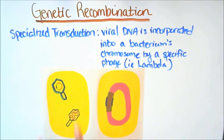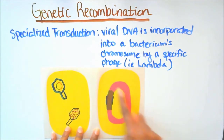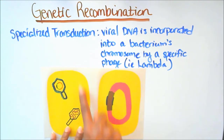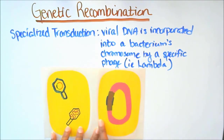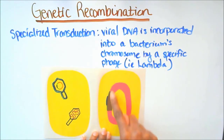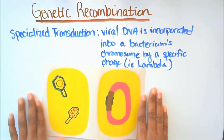Our fourth and last mechanism is specialized transduction. The definition is: viral DNA is incorporated into a bacterium's chromosome by a specific phage. Here we have a bacterium with a specific phage and its DNA. Once released from this cell, the specific phage inserts its viral DNA into a new cell. That new cell then has viral DNA incorporated into its chromosome. This is specialized transduction.